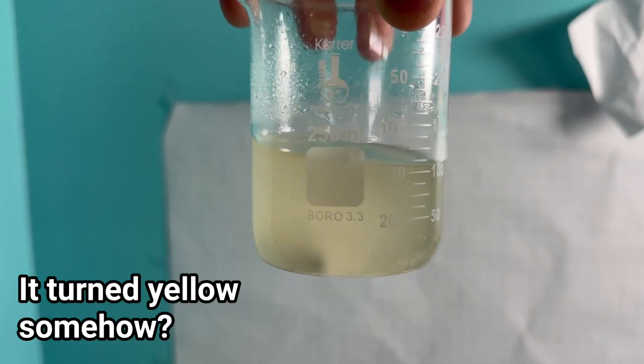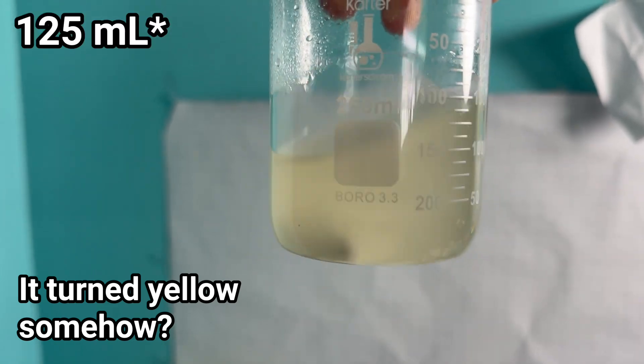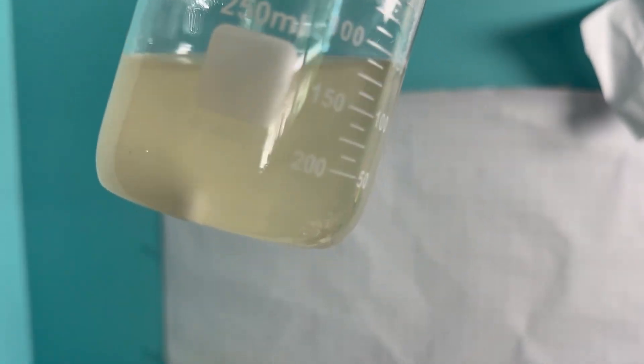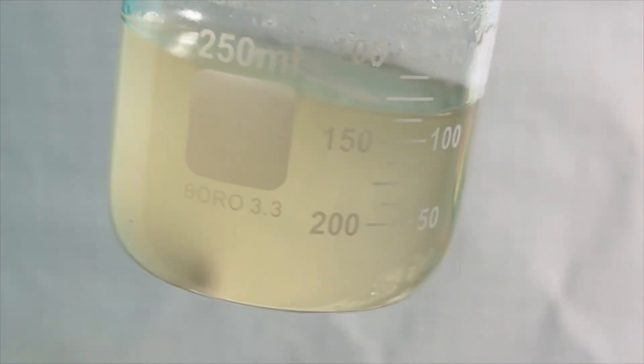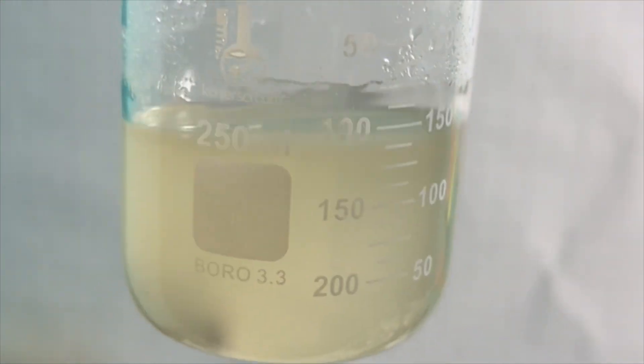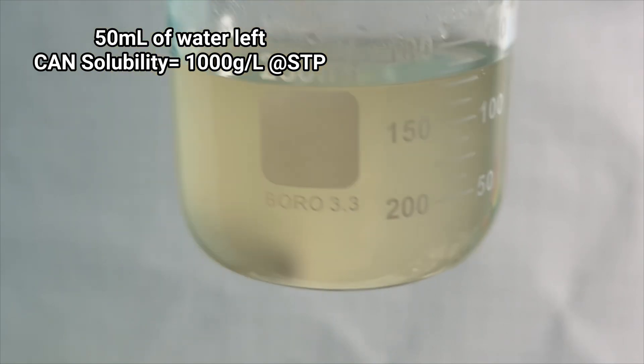I then boiled it down to a bit less than 175 mils, which took way longer than it should have, and then I put it in the fridge. Unfortunately, it still didn't crystallize, which greatly confused me, because only 50 of the 200 grams of CAN should still be dissolved.